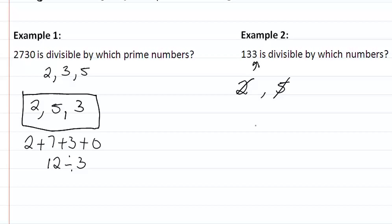Let's check 3. So, I am looking to see if 1 plus 3 plus 3 gives me something that is divisible by 3. So we got 4, 7. 7 is not divisible by 3, so that doesn't help me, so it is not divisible by 3.